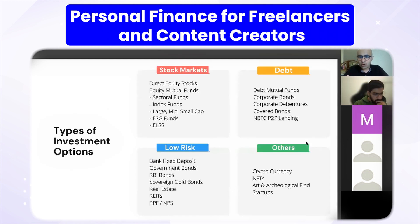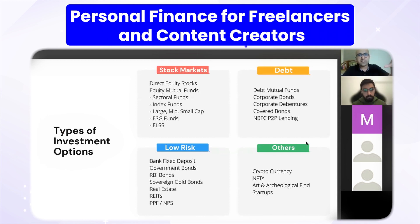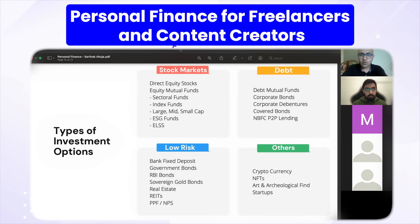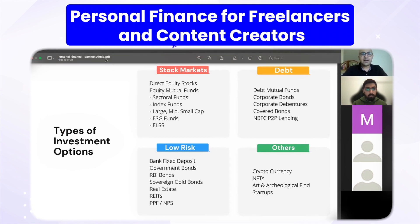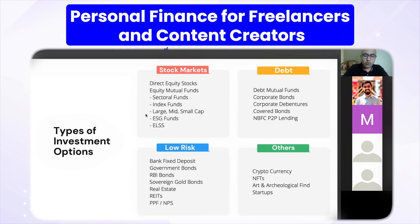Types of investment options: if you want to invest in stock markets, you can do it directly through equities by buying direct stocks like Infosys or TCS. If you don't want to pick individual stocks, you can invest through equity mutual funds — a pool of stocks the mutual fund company manages for you. You can invest in sectoral funds in IT, infrastructure, or finance. Index funds are when you invest directly in Nifty and Sensex — these are passive funds.